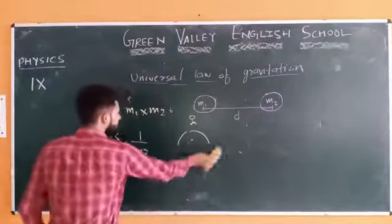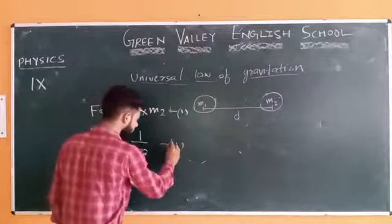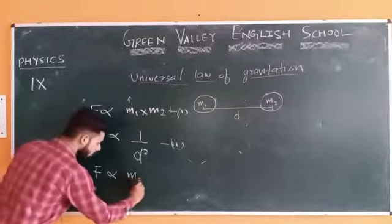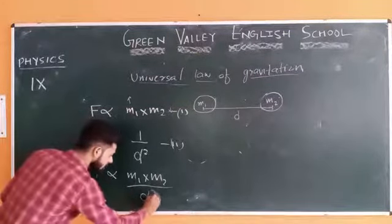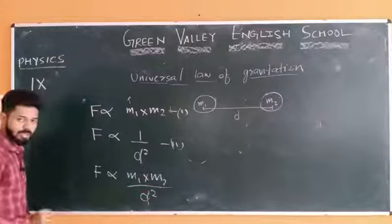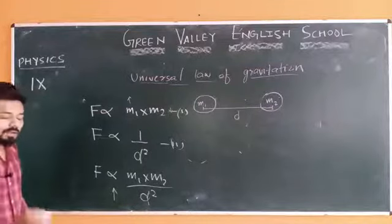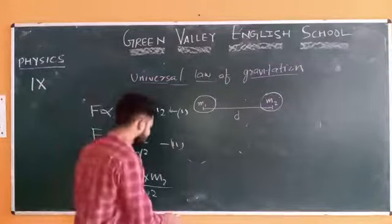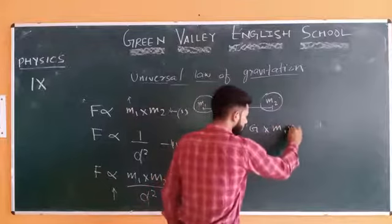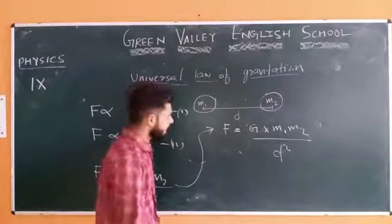Now combining the first and second equations, by combining both equations what you will get is: F is directly proportional to M1 times M2 divided by d squared. You have combined both equations. So F is directly proportional to M1 into M2 divided by d squared. As we know, if we want to remove the proportionality sign, we have to put a constant term.